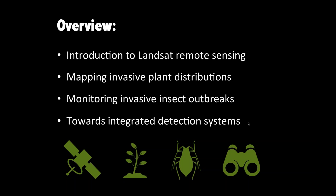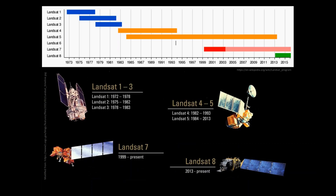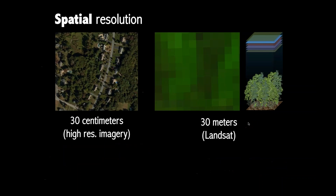So our introduction to Landsat remote sensing. The first Landsat satellite was launched in 1972 and we've had continuous coverage ever since. There are currently two Landsats in operation, Landsat 7 and Landsat 8, and these sensors are a critical part of our Earth observing systems. Landsat has a spatial resolution of 30 meters, which means that we aren't able to see things like individual tree crowns or houses.